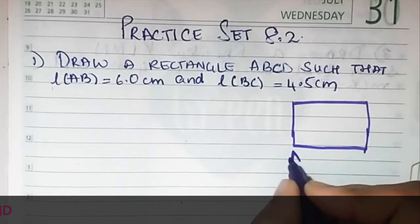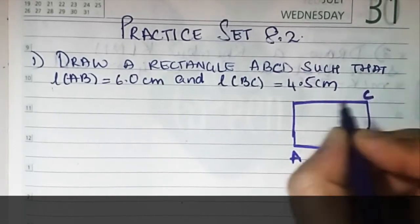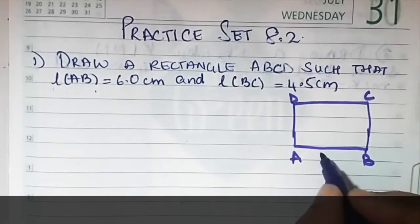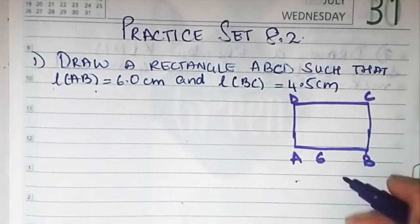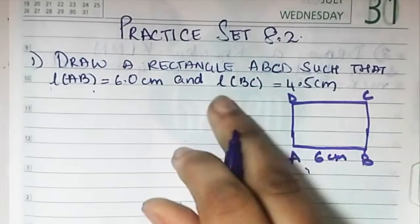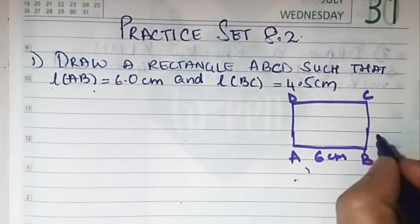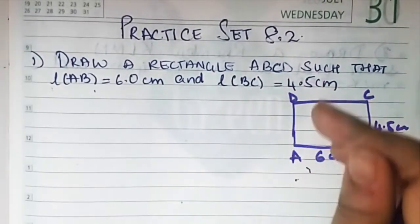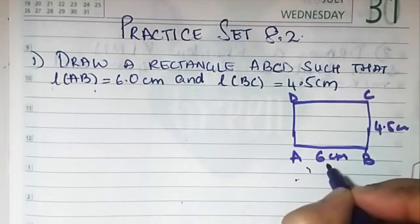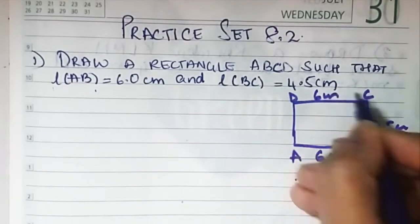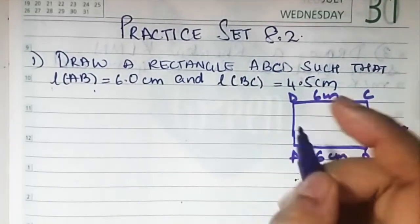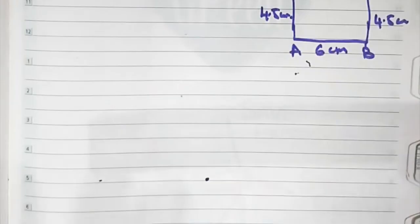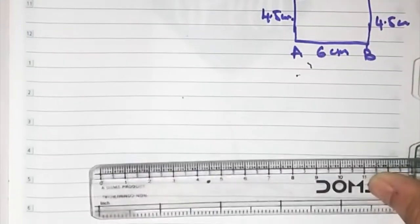So we have A, B, C, D. AB is 6 cm and BC is 4.5. It's a rectangle so opposite sides are equal — 6 cm, 6 cm, 4.5 and 4.5 cm. It's very easy. What we have to do is start with the baseline first.